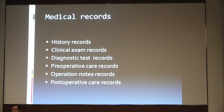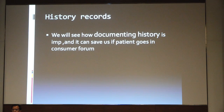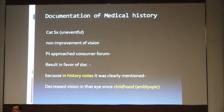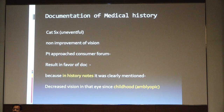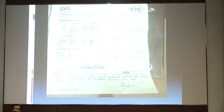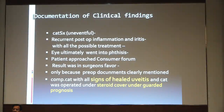What are the medical records you are supposed to keep, and what is their importance? Consider how documentation of medical history is important. A patient underwent cataract surgery which was uneventful, but there was no improvement in visual acuity. The patient approached the consumer forum. The result was in favor of the doctor because the history note clearly mentioned decreased vision in the eye since childhood, as the patient had amblyopia. So the doctor escaped from being sued.